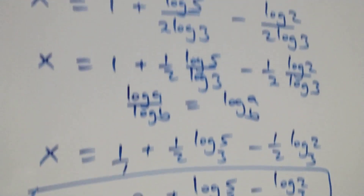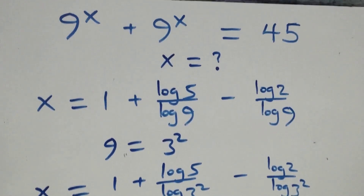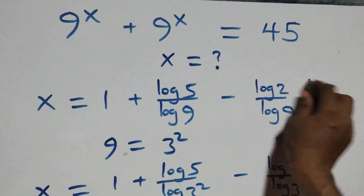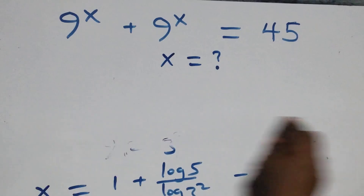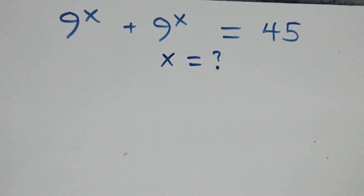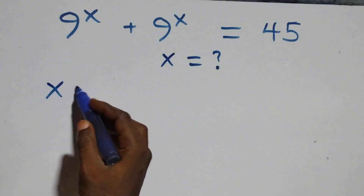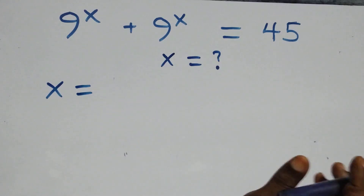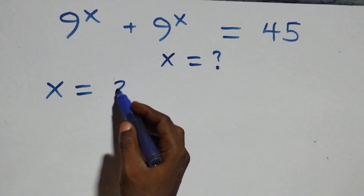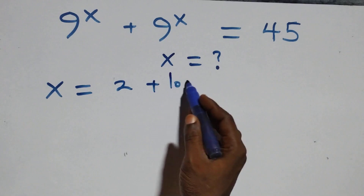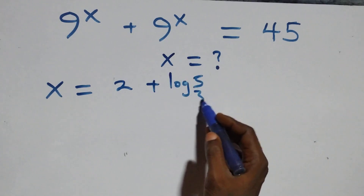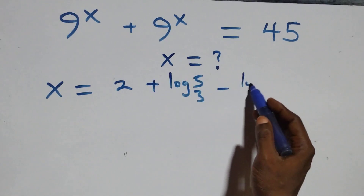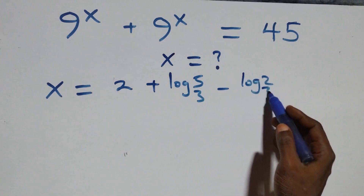Then let's check if this satisfies the given problem. That is, we substitute the value of x — which is 2 plus log₃5 minus log₃2 — back in.